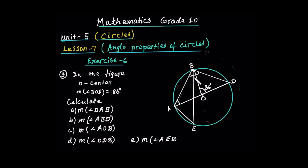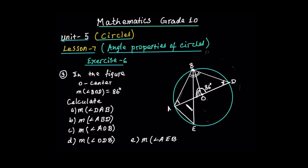We can calculate angle AOB. This means angle AOB, which is related to the measure of angle ODB. The measure of angle ODB. The angle ADB — subtended by arc AB.